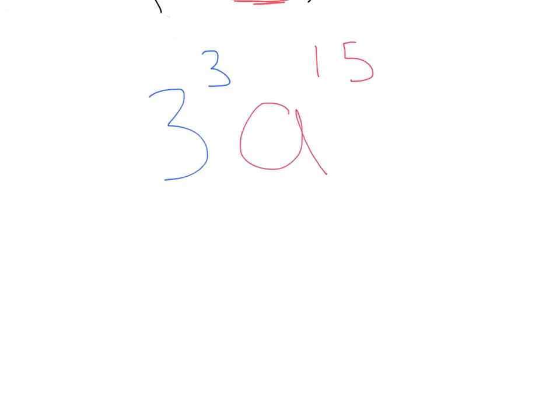If we wanted to simplify this, we could do 3 to the third power, which is 3 times 3 times 3, which would be 27. And then we have a to the 15th.